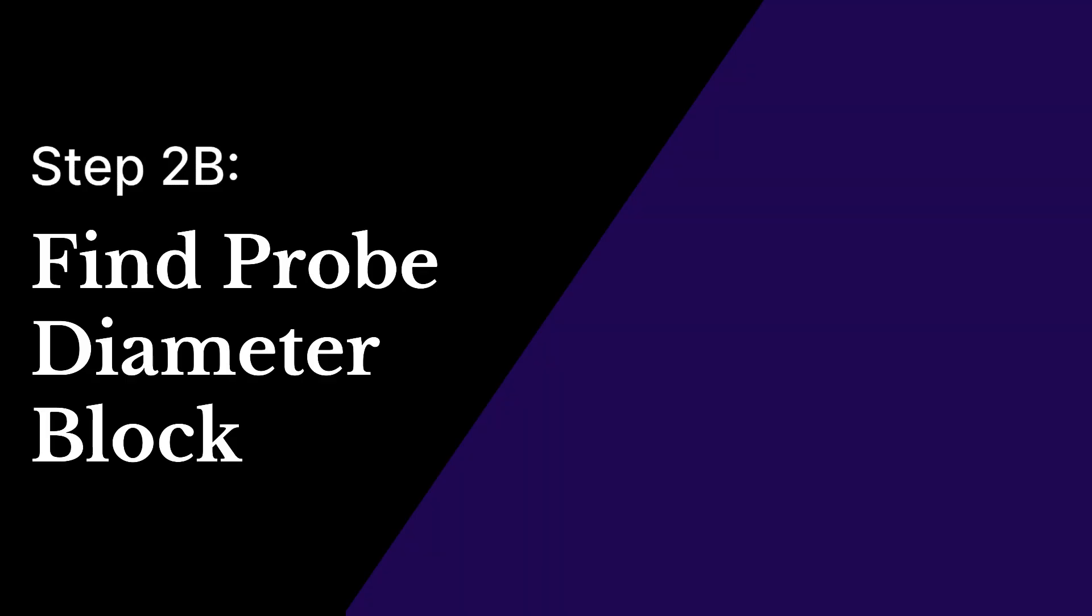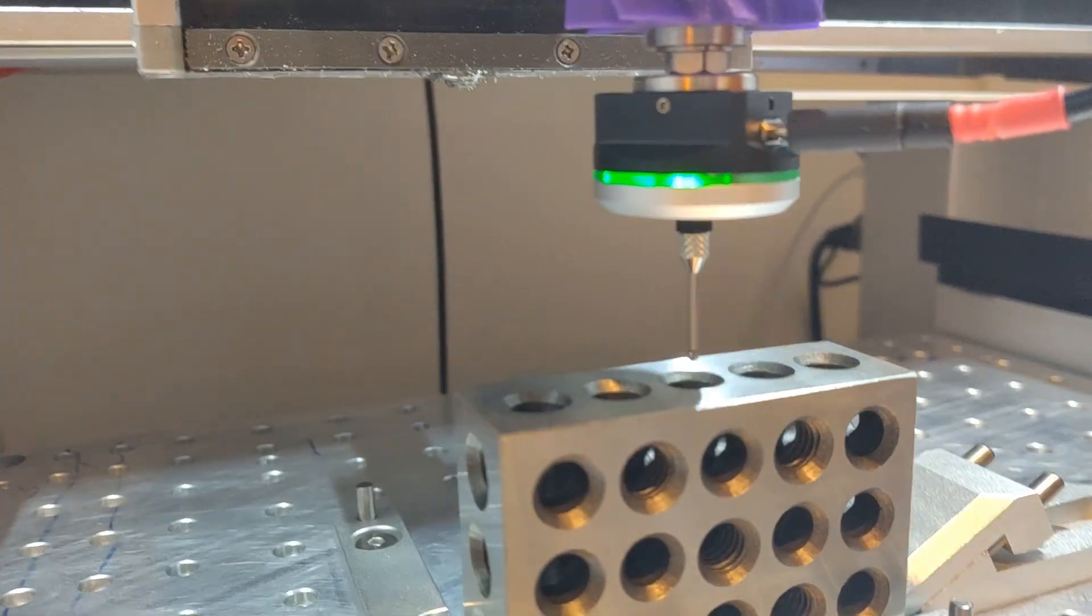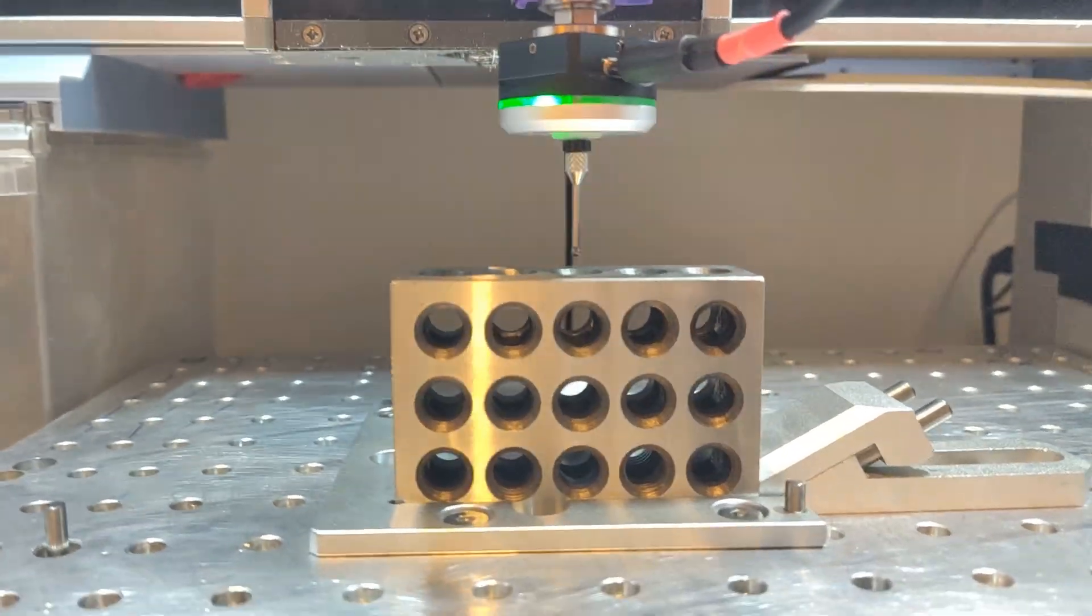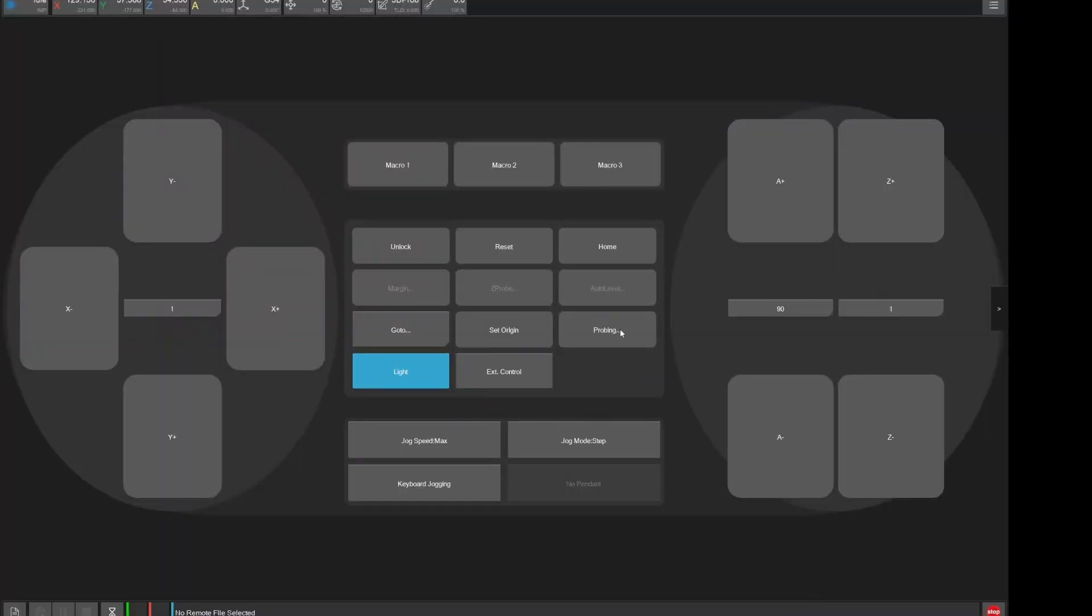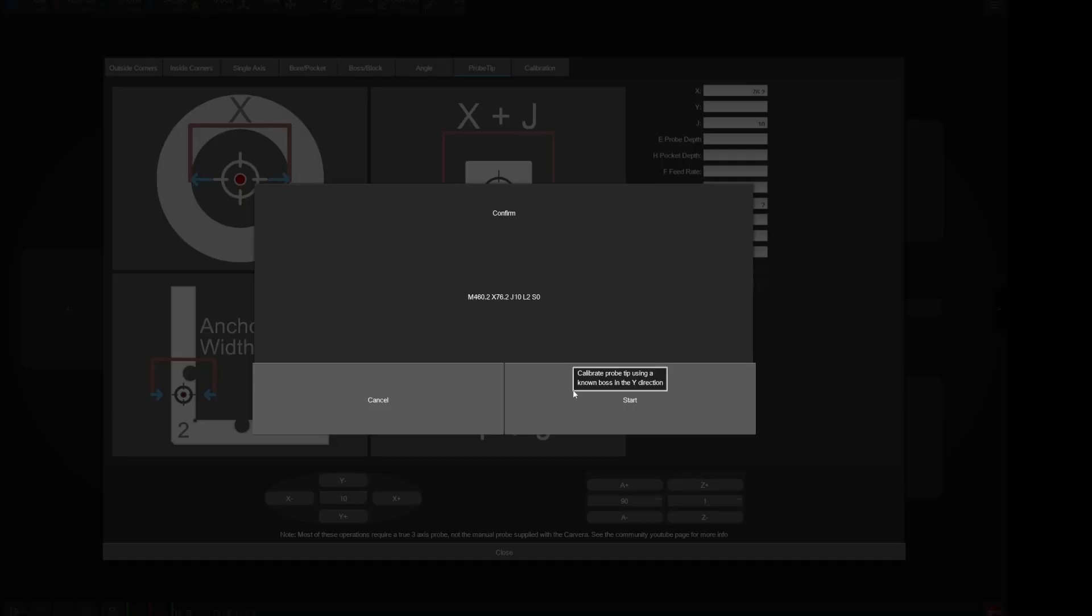Finding the probe tip diameter with a block of known dimensions is very similar. Start with the probe centered and above the block. Open the probing dialog and set the X or Y value to the dimension of the block you are measuring. You can only use one for calibrating the probe tip diameter. J will determine how far off the edge of the block to move before probing down and probing back toward the block. E will determine how far down from the starting position to probe.